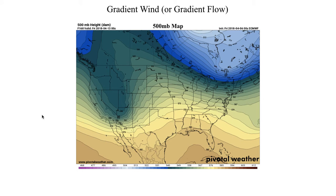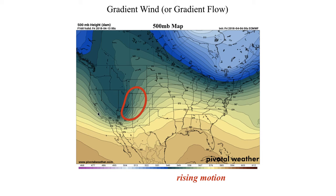Looking at a real-world example on the same diagram: we have an intense trough and a ridge. As wind goes from the trough base to the ridge, it accelerates, producing upper-level divergence and rising motion downstream of the trough. Upstream of the trough, wind decelerates from the ridge toward the trough base, resulting in upper-level convergence and sinking motion — which is why surface highs are often located upstream of a trough.